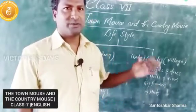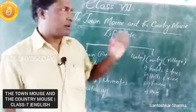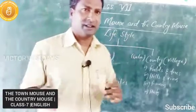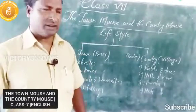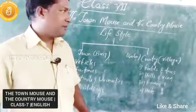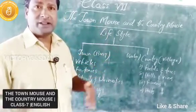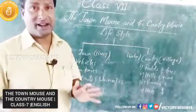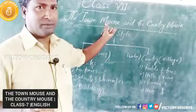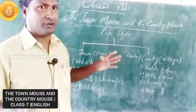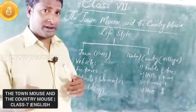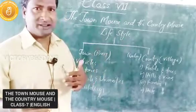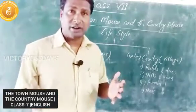Good morning students. Today we will discuss more about the topic. Yesterday we started with the town mouse and the country mouse. The story is about the lifestyles of different regions — cities and villages. We observe different lifestyles through this lesson. The writer explains the lifestyle, food, city life, and village life through the characters of mice. That's what this lesson is all about.